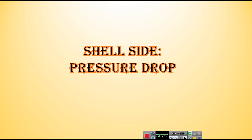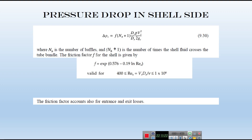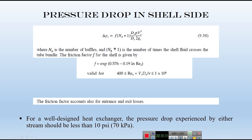For shell side pressure drop, use the correlation: ΔP depends on N_B (number of baffles), D_S, D_e, V_S, and a friction factor F found from a specific shell-side correlation — do not use the Moody's diagram for the shell side. G_C is 1 for SI and 32.2 for British units. Ensure shell side ΔP < 10 psi or 70 kPa.